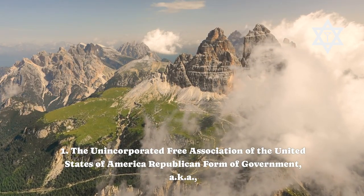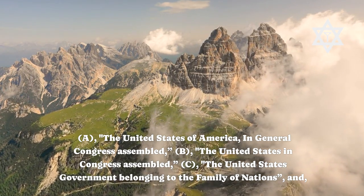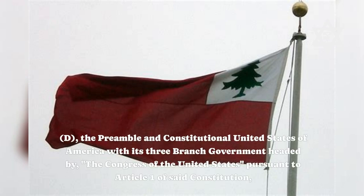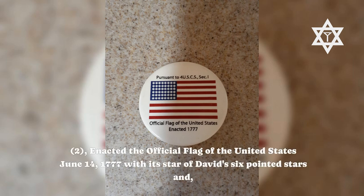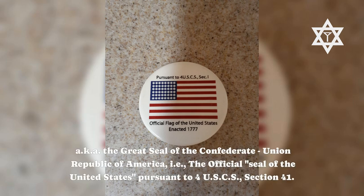The unincorporated free association of the United States of America republican form of government — also known as: (a) the United States of America in General Congress Assembled, (b) the United States in Congress Assembled, (c) the United States government belonging to the family of nations, and (d) the preamble and constitutional United States of America with its three-branch government headed by Congress pursuant to Article 1 — officially pronounced the Declaration by the Representatives of the United States of America in General Congress Assembled on July 4, 1776; enacted the official flag of the United States on June 14, 1777 with its six-pointed Star of David stars; and established the Sigillum Magna Republici Confederati Americae — the Great Seal — pursuant to 4 USCS Section 41.